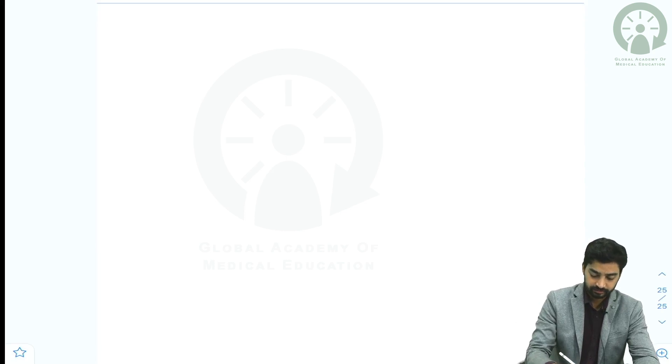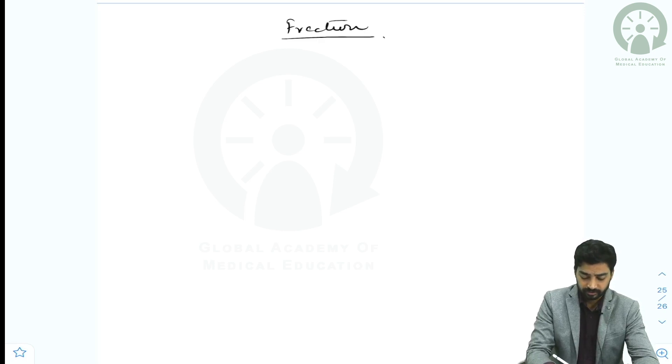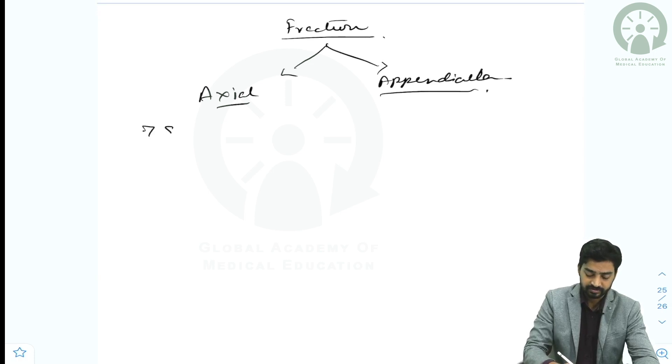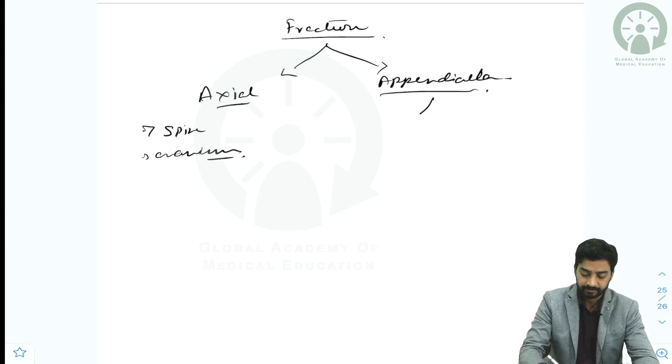In this module, we will discuss fracture in detail. Overall, all of the bones in our body can be divided into two systems: one is the axial system and one is the appendicular system. The axial system comprises spine and cranium, and the appendicular system includes upper limb fractures and lower limb fractures.